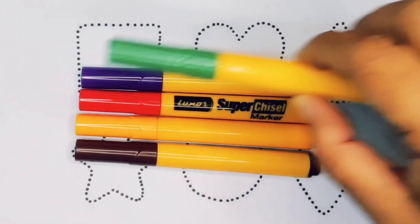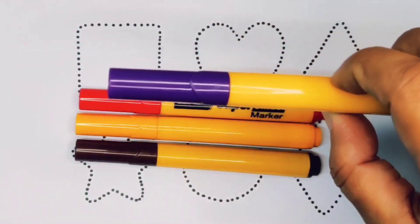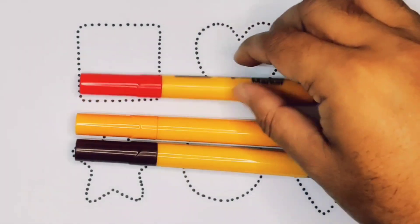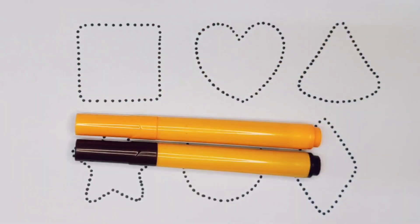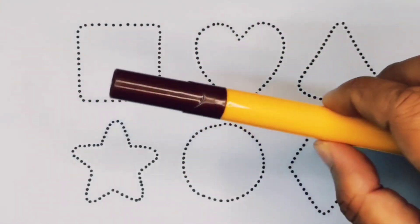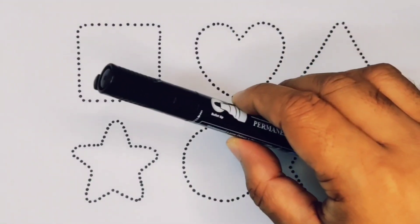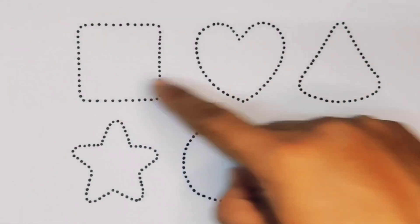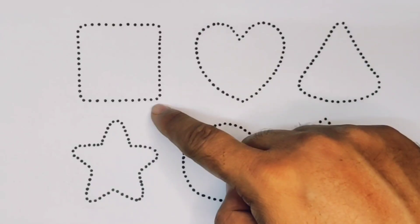Green color, purple color, red color, orange color, chocolate color, and black color. Now let's learn the 2D shapes: square.